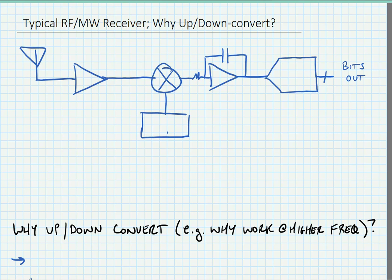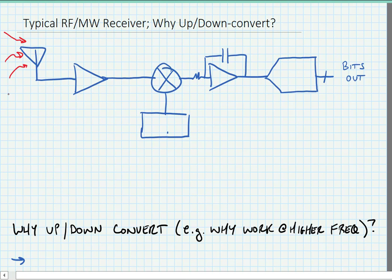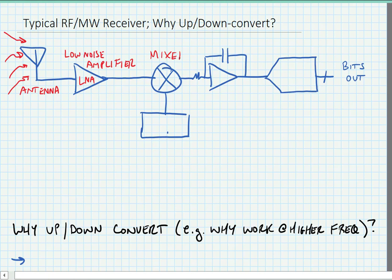A receiver works in the opposite direction of a transmitter. It receives signals from the air into the antenna. There's usually some front-end amplification called an LNA, or low noise amplifier. It's down-converted to low frequency using the combination of a mixer and a local oscillator. There's typically some filtering — shown here as a low-pass filter — and then we convert to the digital domain with an analog-to-digital converter, or ADC.